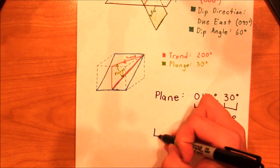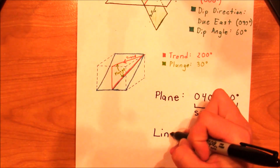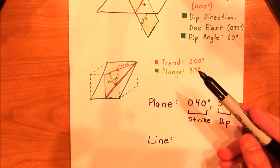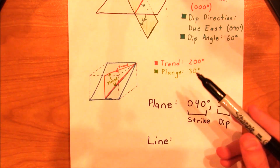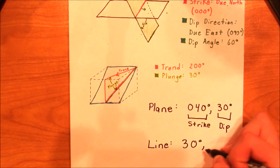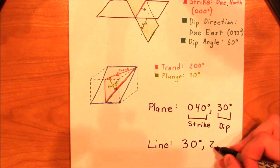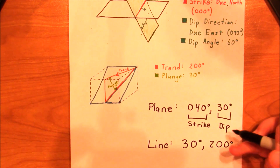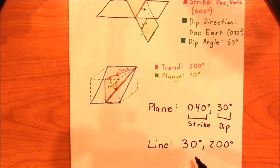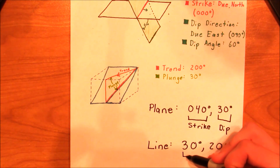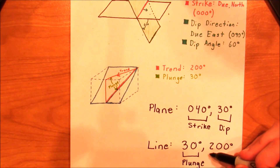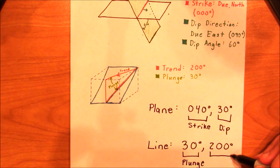For a line, most geologists have the convention of listing the plunge before the trend. So for this line, we would say 30 degrees, 200 — where 30 degrees is the plunge and 200 is the trend.